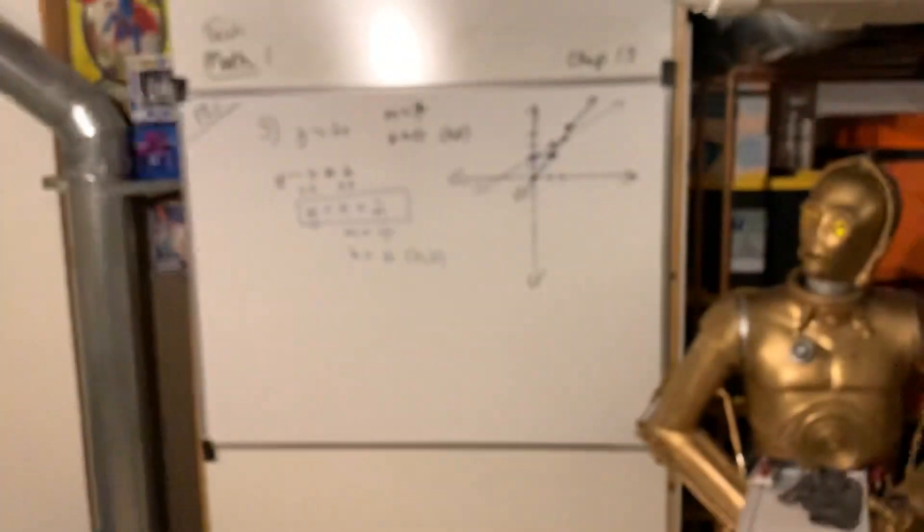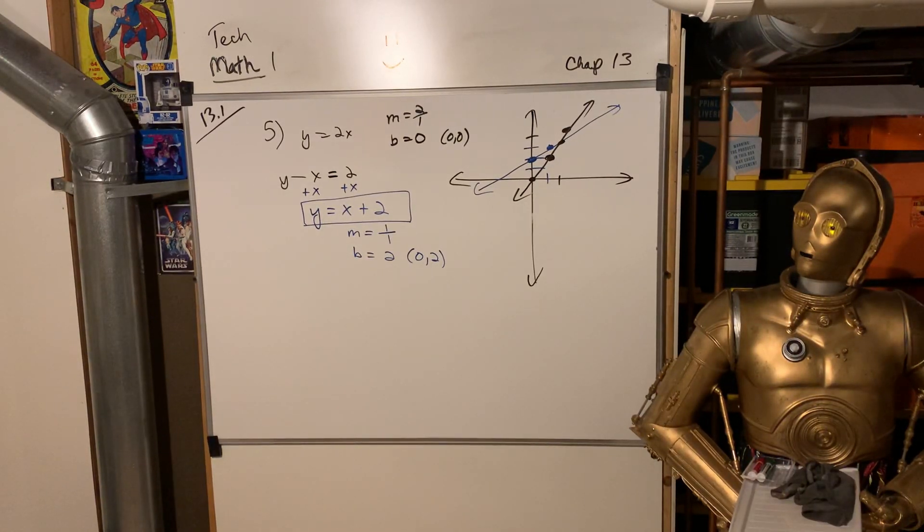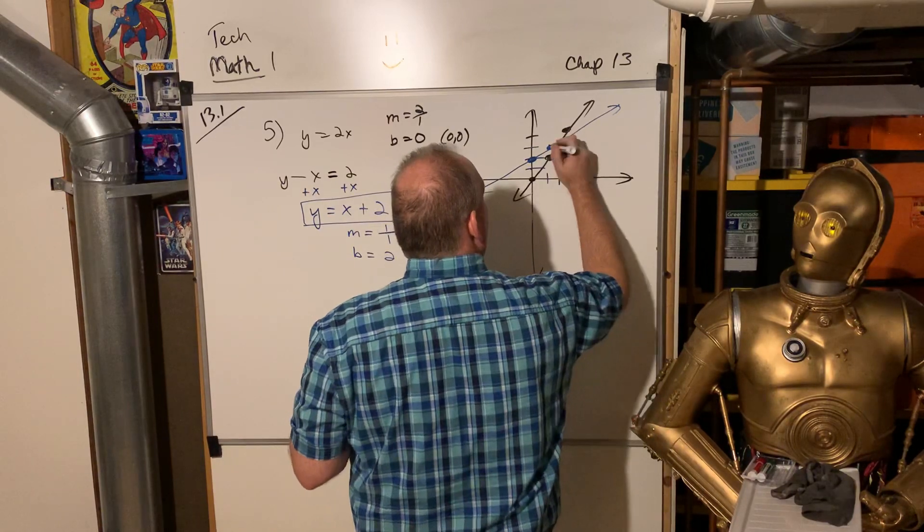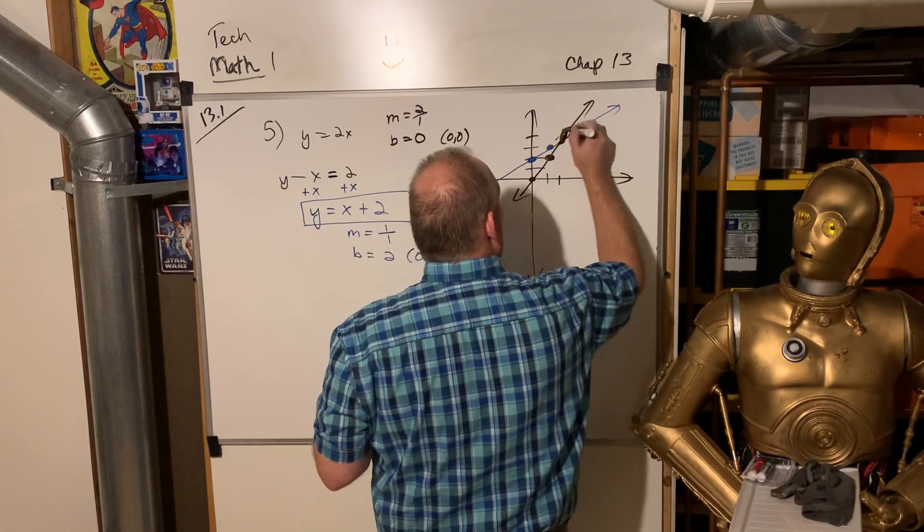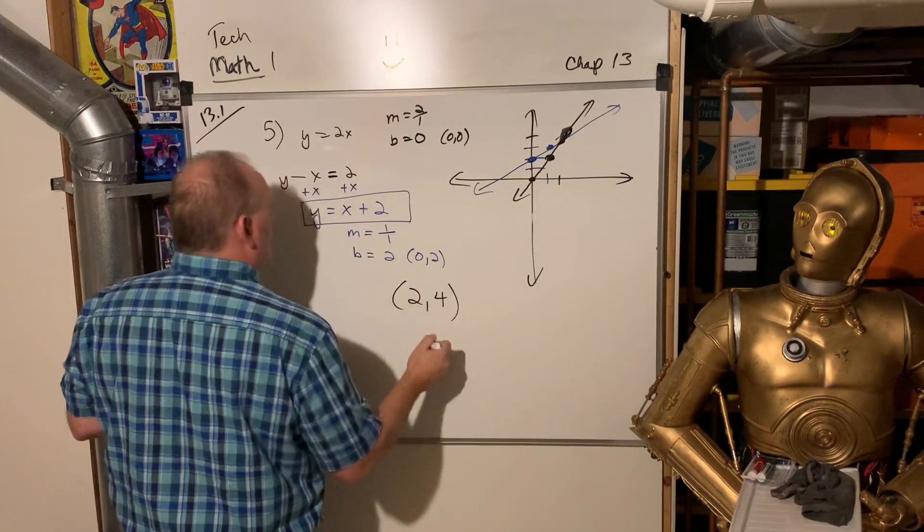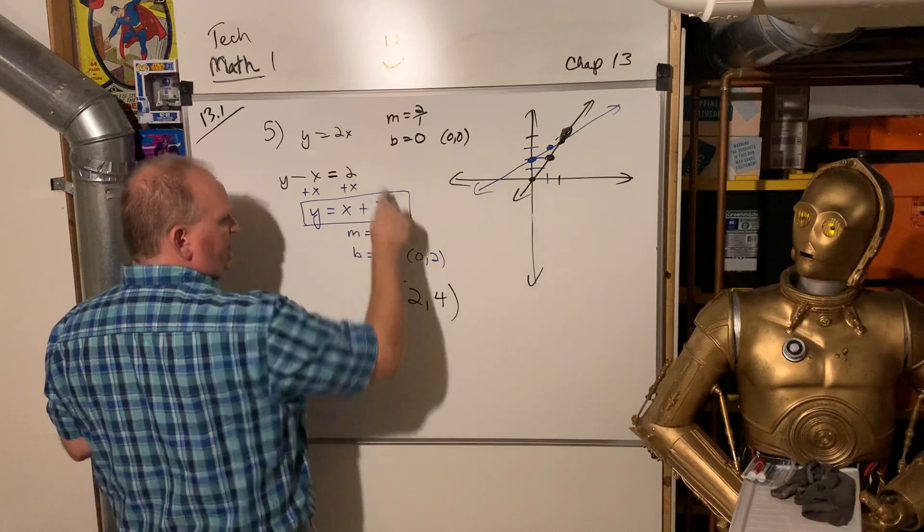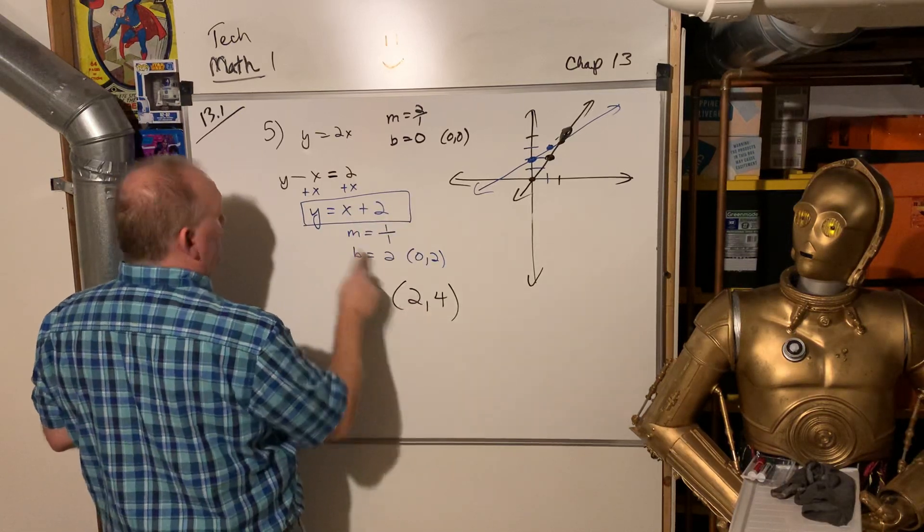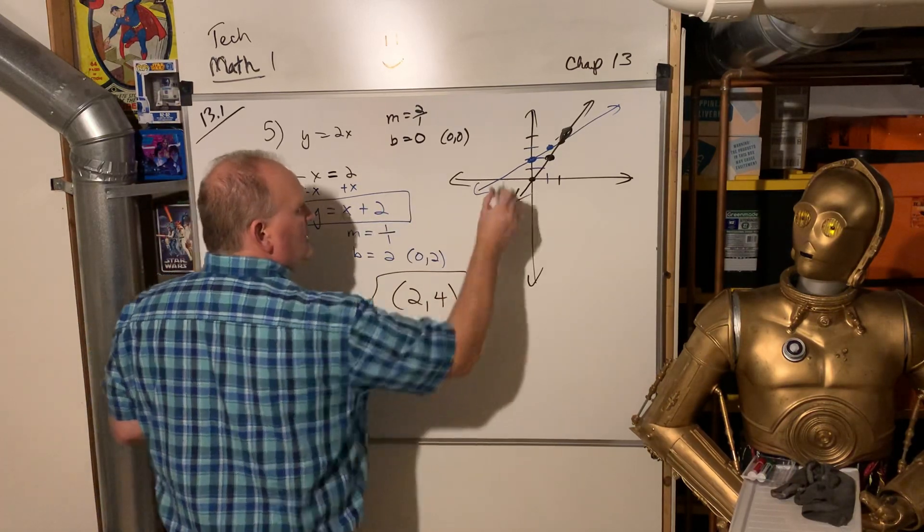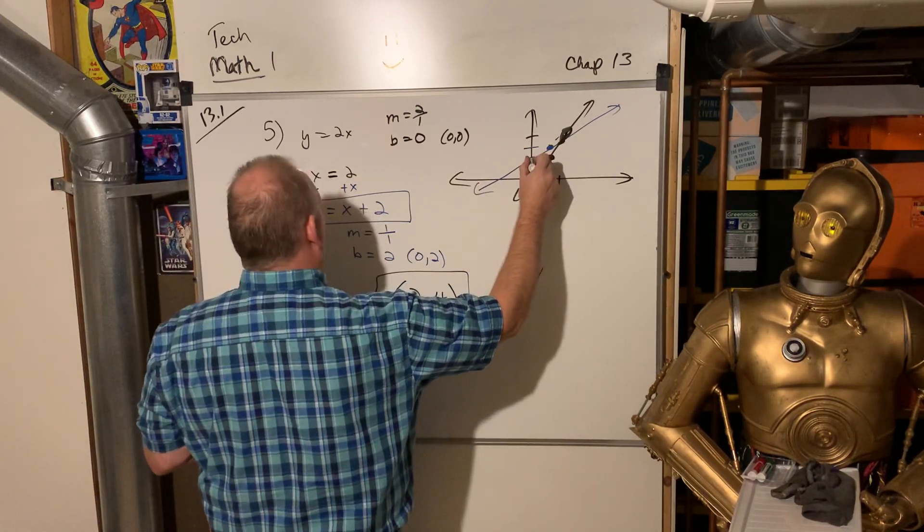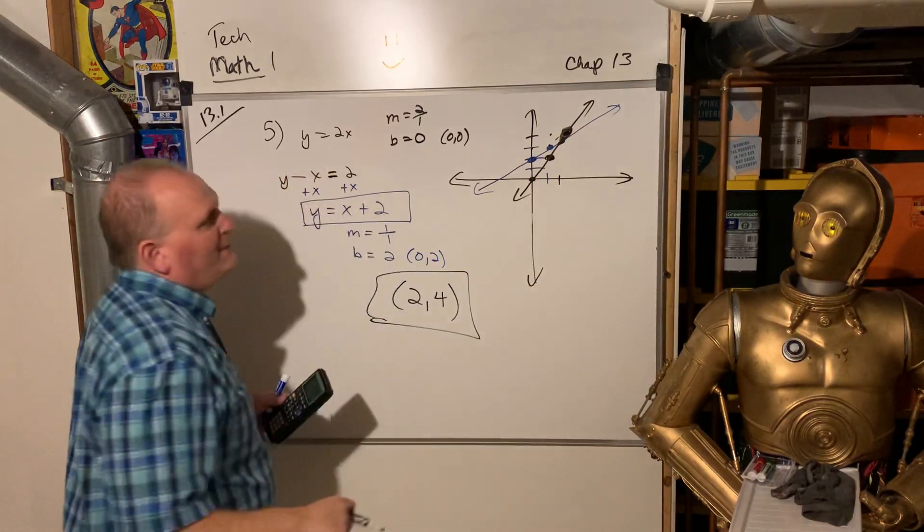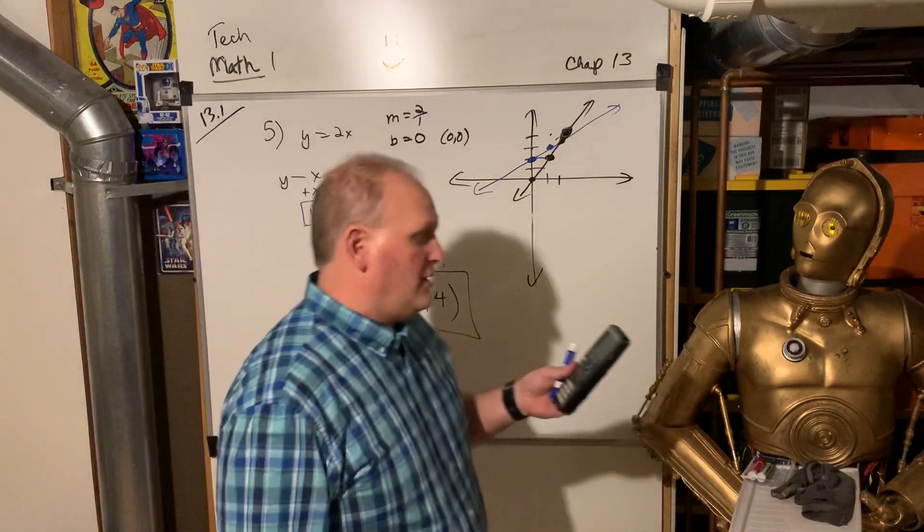So it happens at 2, 4. 2, 4. Oh, so my drawing, my blue drawing is off. This one is supposed to be up there a little more. Oof, I'm a bad drawer. So 2, 4 is the point of intersection. And that definitely works there. And if you put 4 in for that minus 2 in for x, that is 2. So just my blue line, I should have went up 1 and over 1, up 1 and over 1. And then it would have been at 2, 4. I just drew the blue line kind of awful.